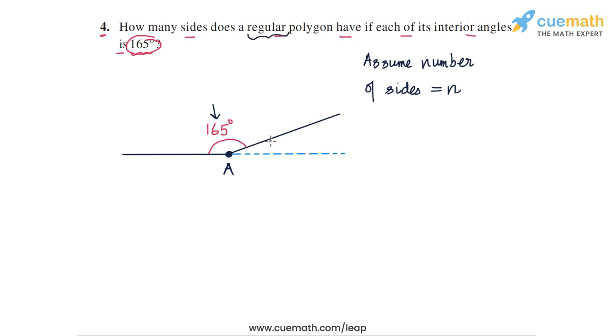This also means that the exterior angle at each vertex will be 180 minus 165, or 15 degrees. So let's write this observation: each exterior angle of the polygon has a measure of 15 degrees.